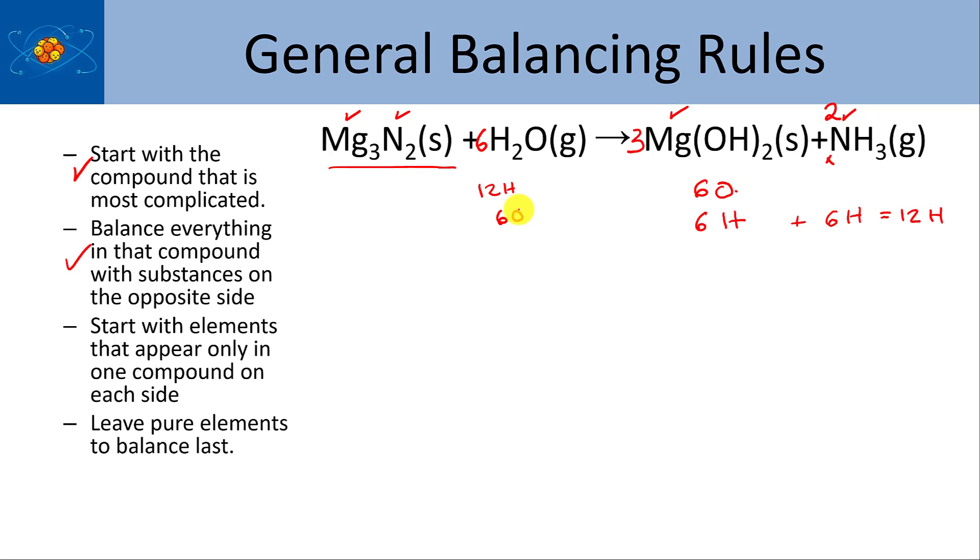So it looks like it can be complicated but most of the time that last step there's only one way to do it. And so just start by counting all of the elements up on the right hand side that aren't balanced. I didn't do the magnesium and the nitrogen because I just balanced those. And then look on the other side and see what you can change to balance the reaction.